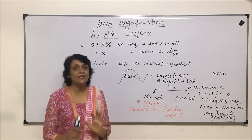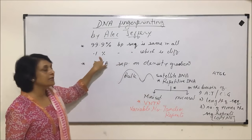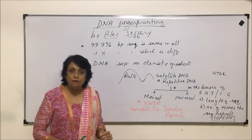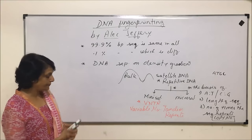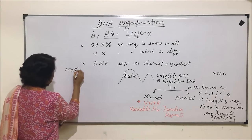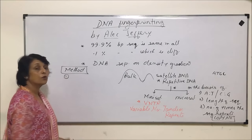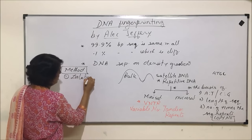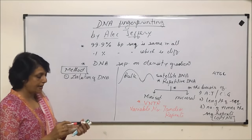Each individual has its unique identification from that 0.1% of DNA which is unique to every individual — that is what we want to print or scan. Now, if we talk about the method for DNA fingerprinting, the first step is going to be isolation of DNA. How are we going to isolate that DNA?